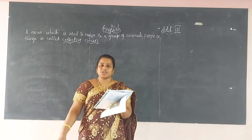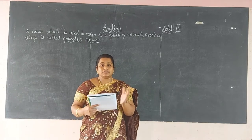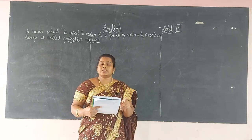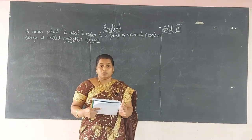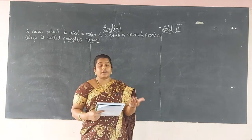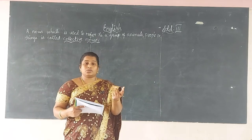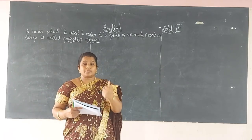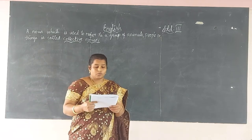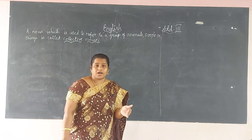Hi students, today we are going to learn collective nouns. A noun describes a person, people, animals, and other things. Nouns have four or five types: countable nouns, uncountable nouns, concrete nouns, abstract nouns. And now we are moving to collective nouns, which is also one part.